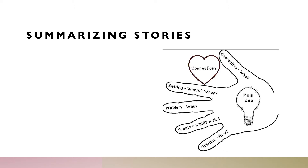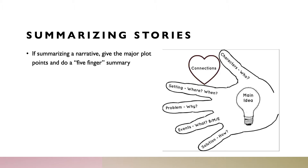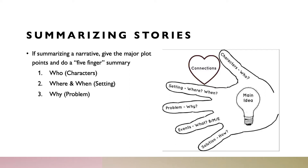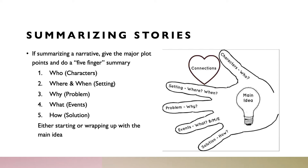When you're summarizing stories, you want to give the major plot points and do what we call a five-finger summary, where you answer the journalistic questions: who, what, when, where, why, and how, and also give the main idea. For who, you focus on the characters doing the actions. For where and when, this is the setting of the story. Why is the problem or reason something happens. What covers the events of the story. And the how could be a solution or a process for how the events worked themselves out. Then you want to either start or wrap up with the main idea — like the moral of the story or the main theme.